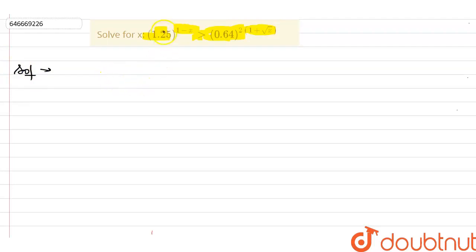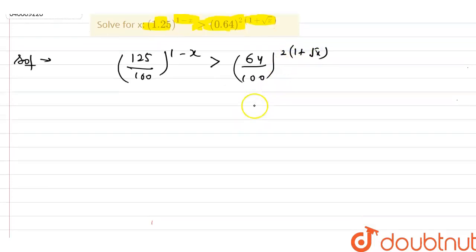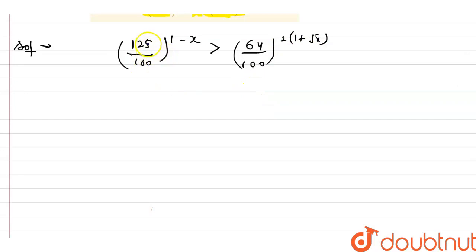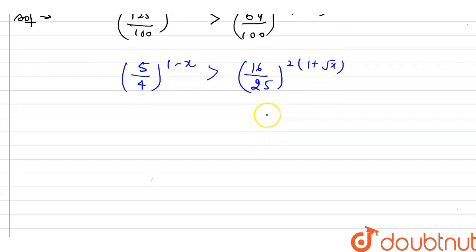I can write 1.25 as 125 over 100, raised to the power (1 minus x), and it should be greater than 64 over 100 raised to the power 2(1 plus root x). Cancelling, this gives 5 over 4 raised to (1 minus x) greater than 16 over 25 raised to the power 2(1 plus root x).